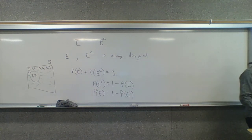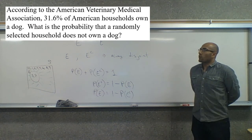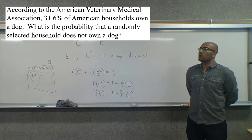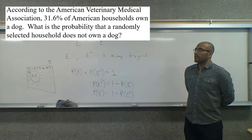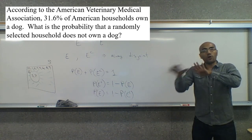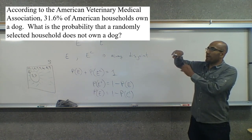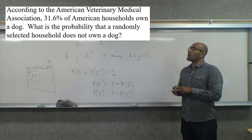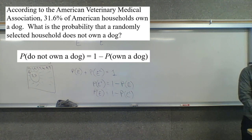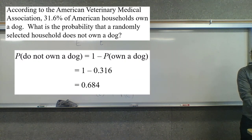For example, according to the American Veterinary Medical Association, 31.6 percent of American households own a dog. What is the probability that a randomly selected household does not own a dog? Owning a dog and not owning a dog are complements — you either own a dog or you don't. So one minus 31.6 percent equals 68.4 percent. If we know 31.6 percent own a dog, we automatically know 68.4 percent do not own a dog.